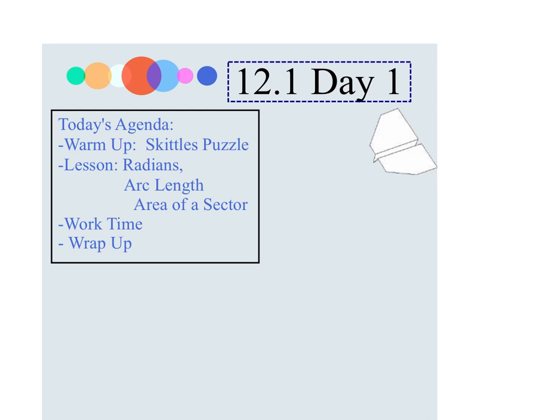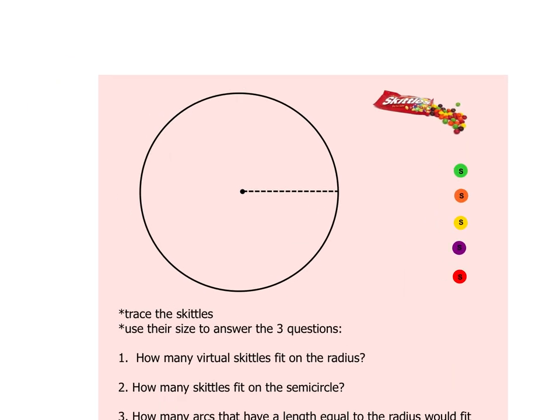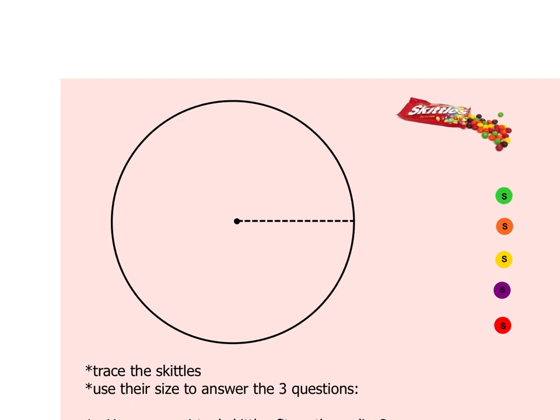So, for today, we're doing a little introduction to radians, and I'd like you to go to this page right here. What in the world is a radian? Well, I think you guys know that this, for example, would be about a 30-degree angle.